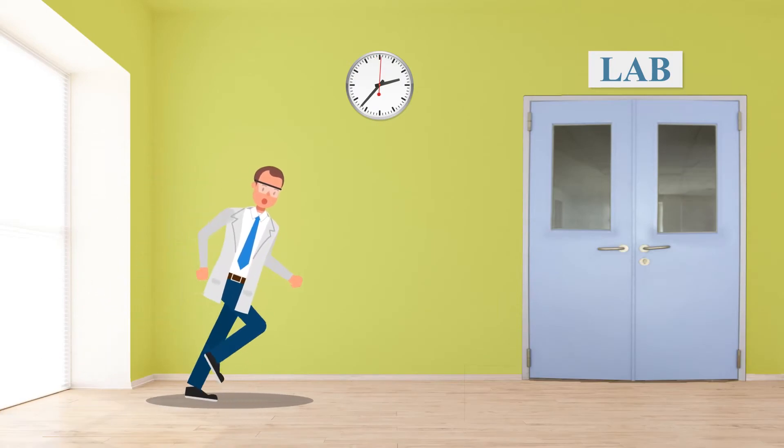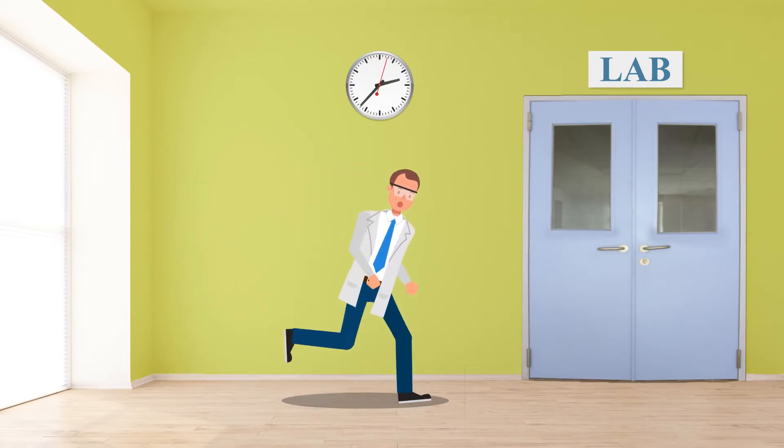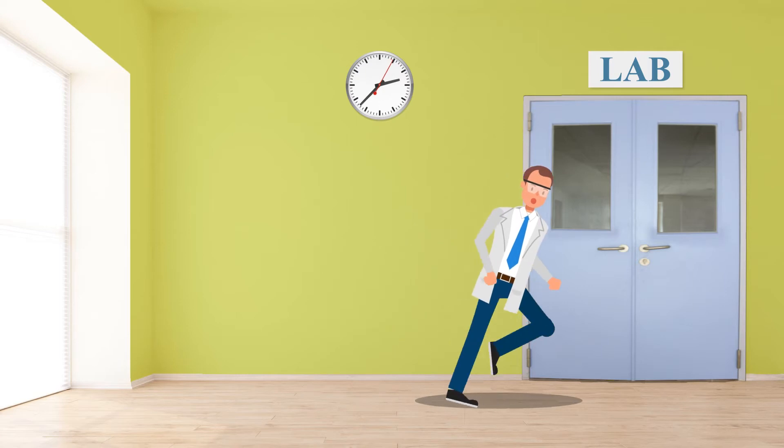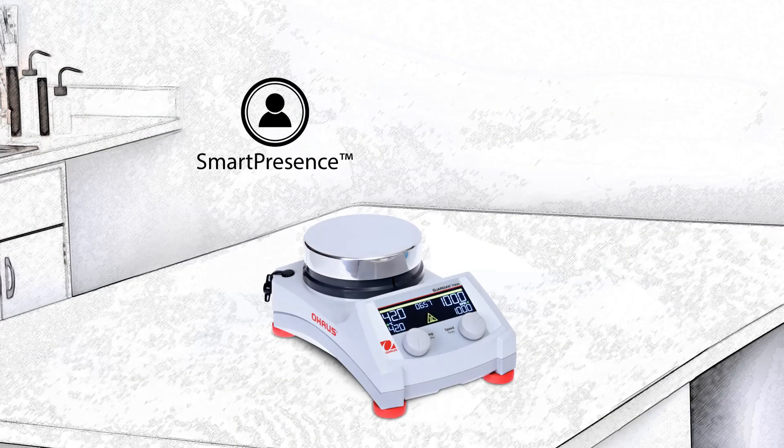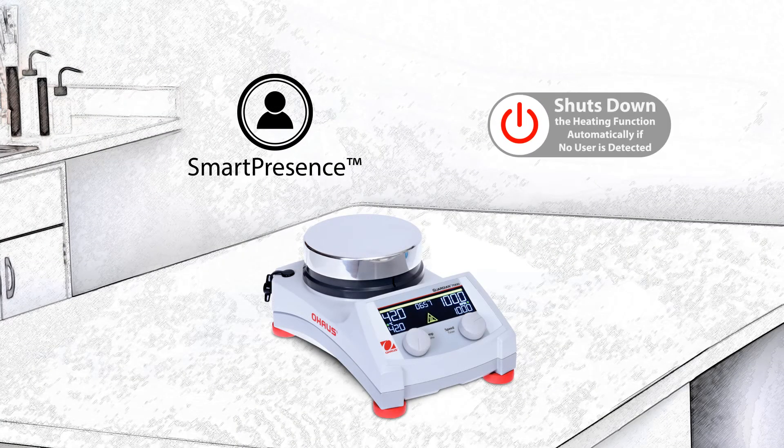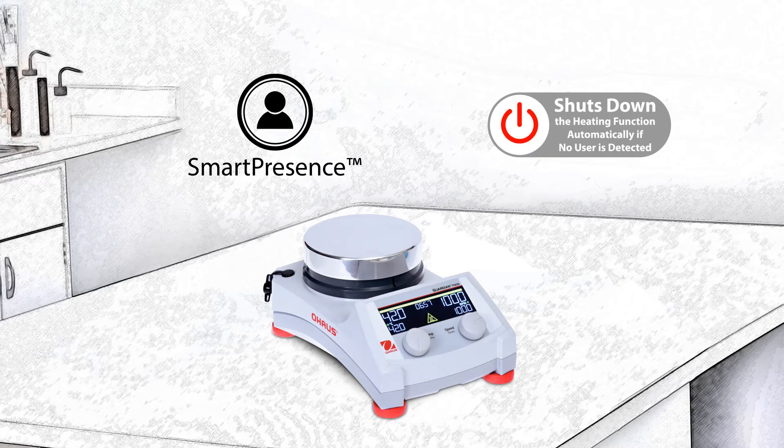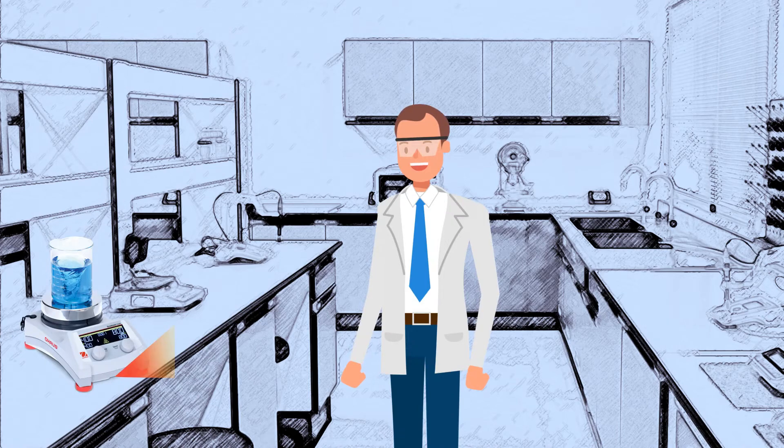Safeguarding lab operations is a guiding principle behind every piece of O-House laboratory equipment. Offering superior safety features and intelligent performance, the Guardian 7000 series hot plate stirrers feature Smart Presence, an exclusive IR-based proximity sensor that recognizes a user nearby.